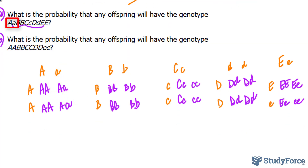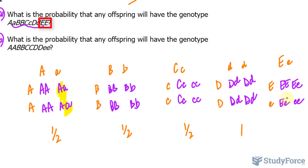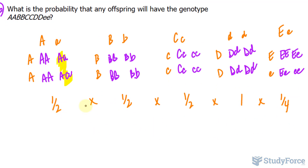The chances of that are one in two. The chances of capital B capital B are one in two. For gene C, it is again one in two. For capital D little d, it's one in four. And capital E capital E is one in four. Multiplying all these together: two times two times two makes eight, times four is 32. One times one times one times one times one times one gives one in 32.